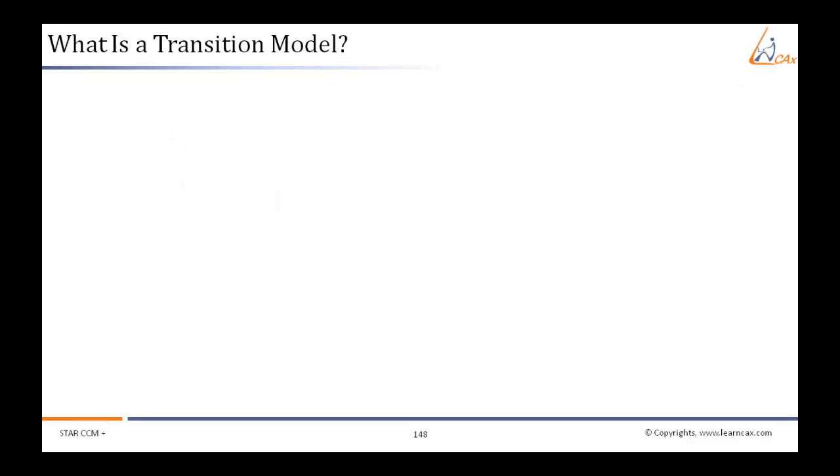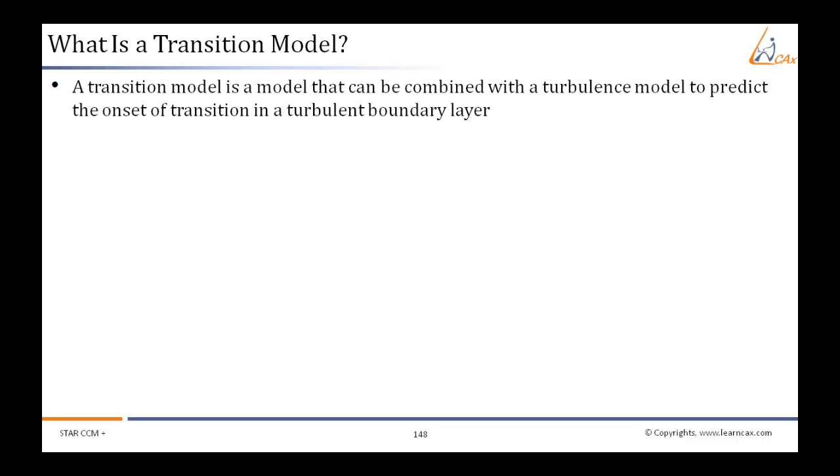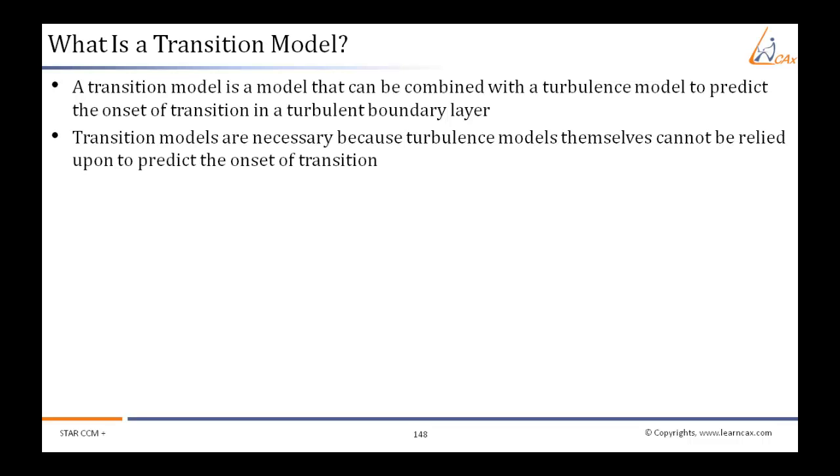For simulation of such transition flow, we need a transition flow model. What is this transition flow model? A transition model is a model that can be combined with a turbulence model to predict the onset of transition in a turbulent boundary layer. Transition models are necessary because turbulence models themselves cannot be relied upon to predict the onset of transition.